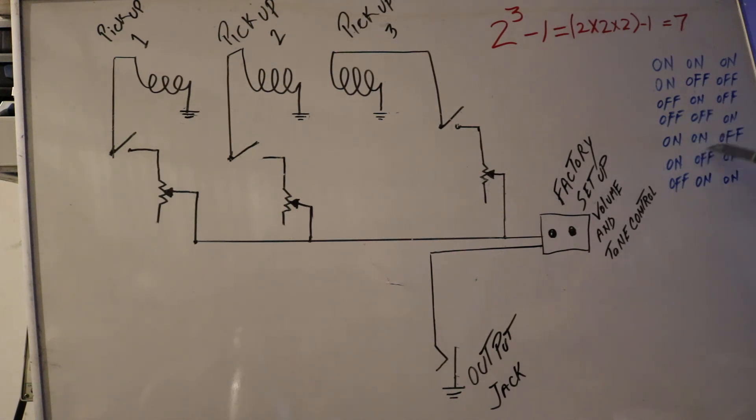The last pickup would be on. The first two pickups would be on, the last would be off. The middle pickup would be off. The first and last would be on. And the middle and last pickup would be on, the first would be off. So the seven different combinations that we can create off of this.